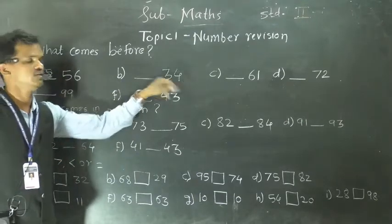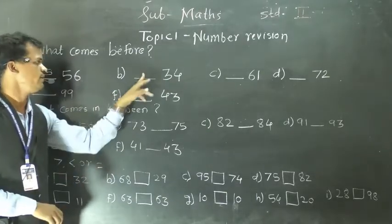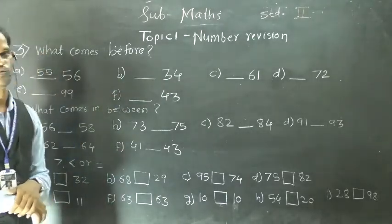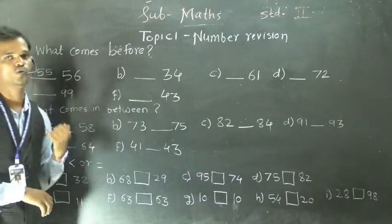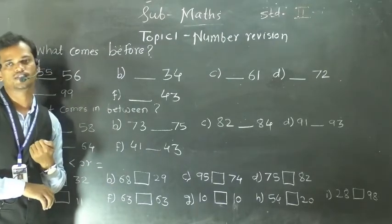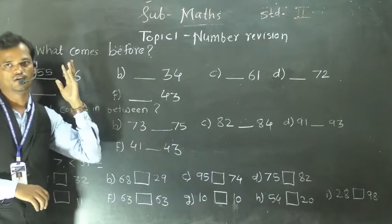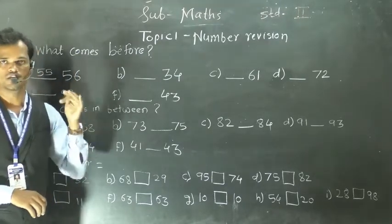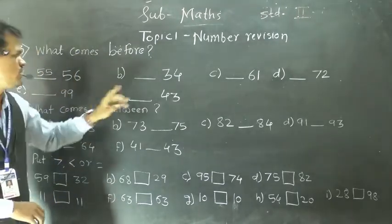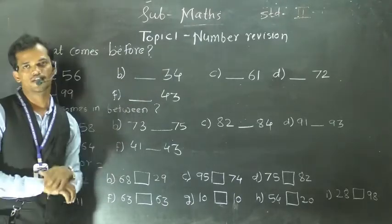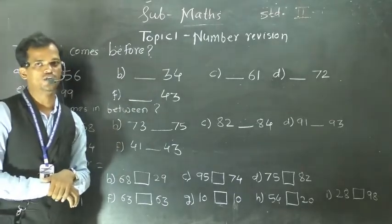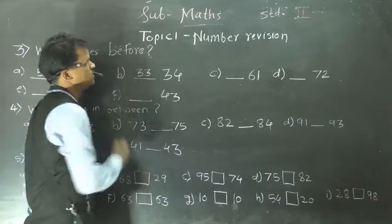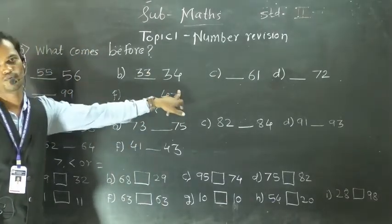Next: 34, and we have to find the before number of 34. So before 34, which number comes in the number series? See: 31, 32, 33, 34. So in the number series 33 comes before 34. So 33 is the before number of 34.